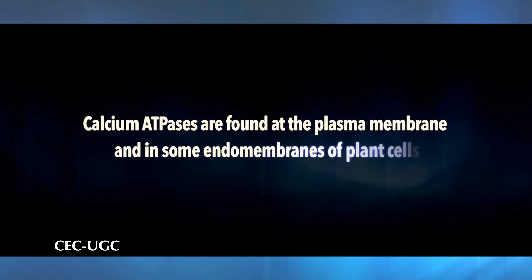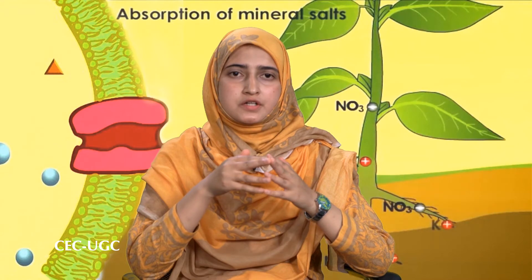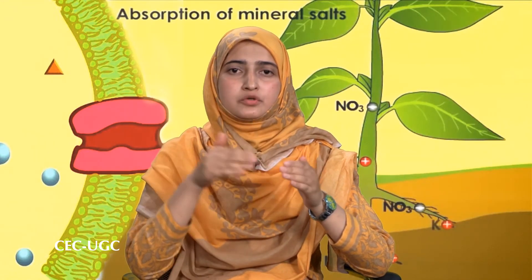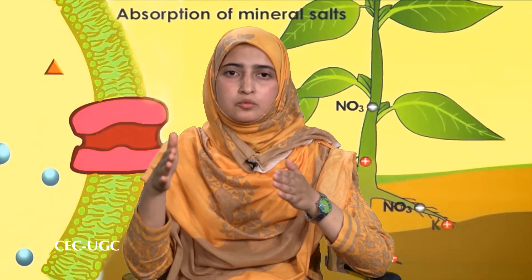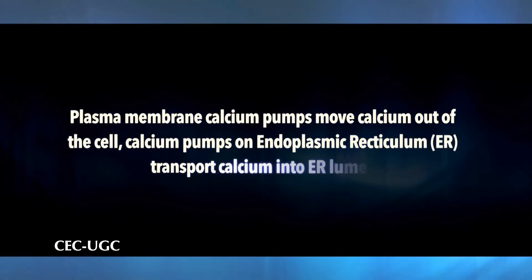Calcium ATPases are found at the plasma membrane and in some endomembranes of plant cells. Plant cells regulate cytosolic Ca2+ concentrations by controlling the opening of Ca2+ channels that allow calcium to diffuse in, as well as by modulating the activity of pumps that drive Ca2+ out of the cytoplasm back into extracellular spaces. Whereas the plasma membrane calcium pumps move calcium out of the cell, calcium pumps on the ER transport calcium into the ER lumen.